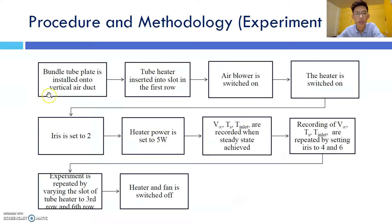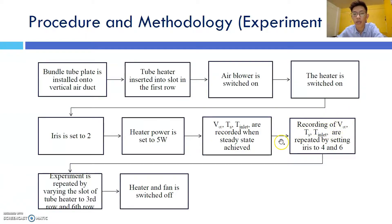For Experiment 20B, the bundle tube plate is installed onto the vertical air duct and the tube heater is inserted into the slot in the first row. The air blower and heater are switched on, the iris is set to 2, and the heater power is set to 5W. These three variables are recorded at steady state, then repeated with the iris set to 4 and 6. The experiment is then repeated by varying the tube heater slot to the third and sixth rows. When complete, the heater and fans are switched off.